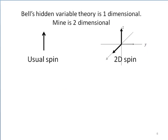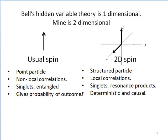Bell was just using the usual quantum model for a spin one-half, as being a point particle with intrinsic angular momentum. In contrast, a 2D spin is assumed to have two axes of spin quantization. It has structure and is not a point particle.